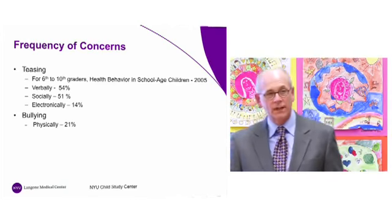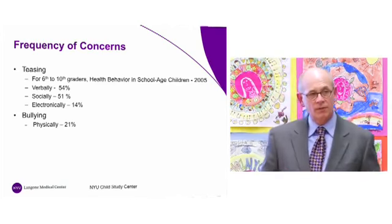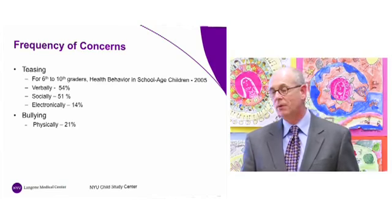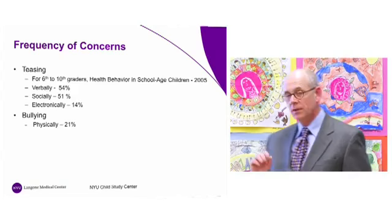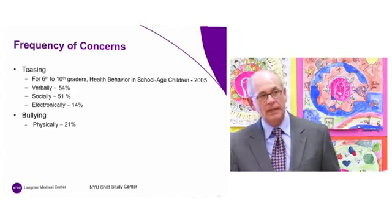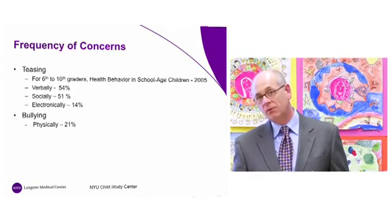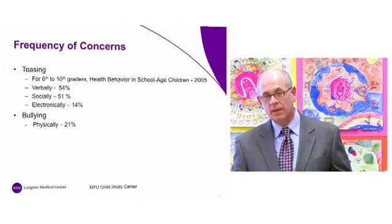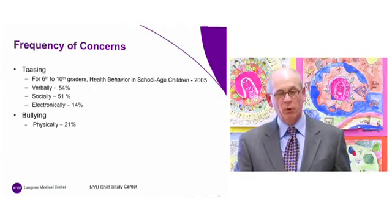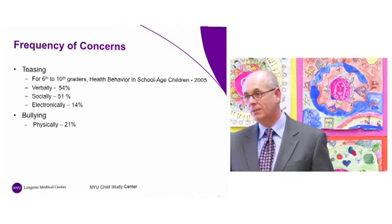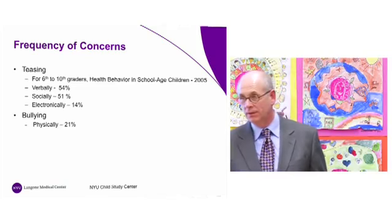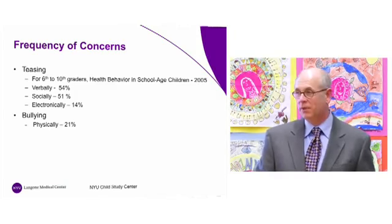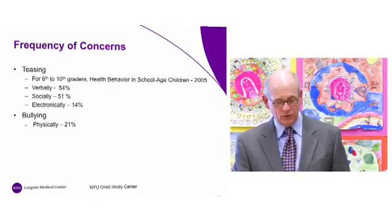With regard to physical bullying, 21% of kids reported that it had happened to them within the last time period — so not the majority of kids, but a fair number. The definition was rather broad, indicating gestures and threats of being physically harmed, as opposed to necessarily 21% of kids saying that they had been beaten up and injured. It included any physical altercation or threat.